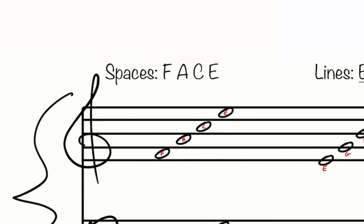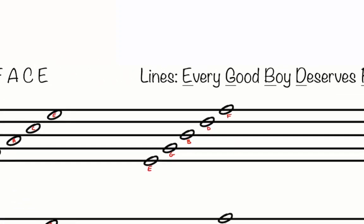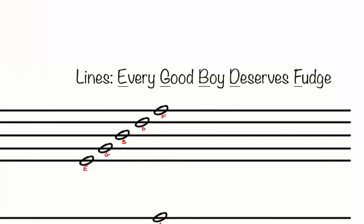The spaces on the treble clef still spell the word FACE, and you can find the lines on the treble clef by using the sentence 'Every Good Boy Deserves Fudge' and placing the first letter of each word on each line from bottom to top.